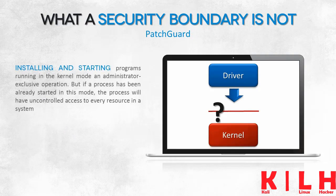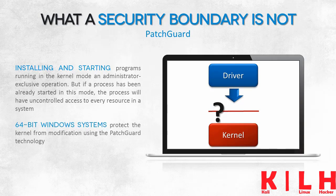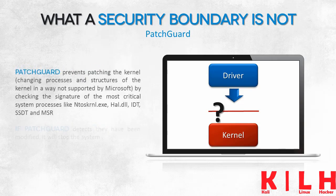PatchGuard is another technology we'll talk about. This technology has been developed to prevent the installation of programs running in kernel mode. These programs operate at a low level and can directly access other system processes, meaning they are able to access computer resources indirectly. PatchGuard is a security solution deployed in 64-bit systems. If PatchGuard detects a modification of system processes that is unsupported by Microsoft, the system halts as a stop error is reported. All the most important system processes — ntoskrnl.exe, HAL.dll, IDT, SSDT, and MSR — are protected using PatchGuard.